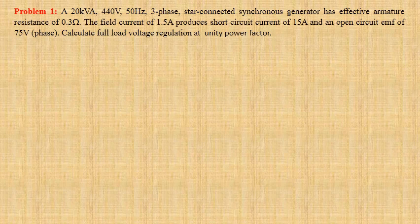A 20 kilovolt ampere, 440 volt, 50 hertz, three-phase star connected synchronous generator has effective armature resistance of 0.3 ohm. The field current of 1.5 ampere produces short circuit current of 15 ampere and an open circuit EMF of 75 volt per phase. We have to determine full load voltage regulation at unity power factor.